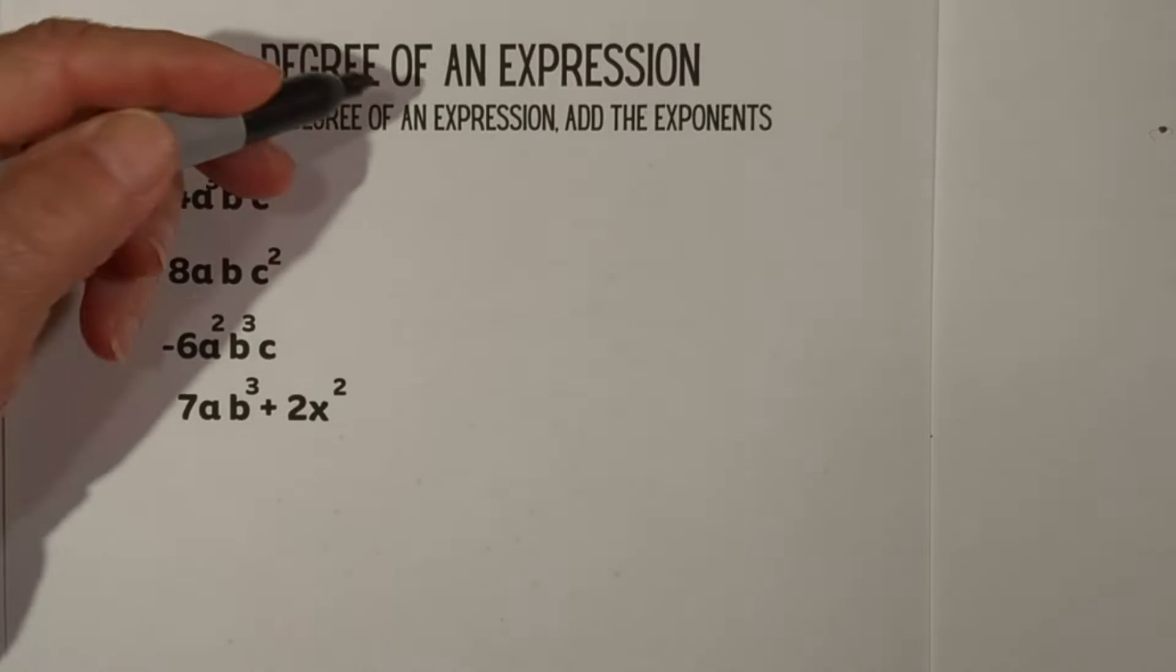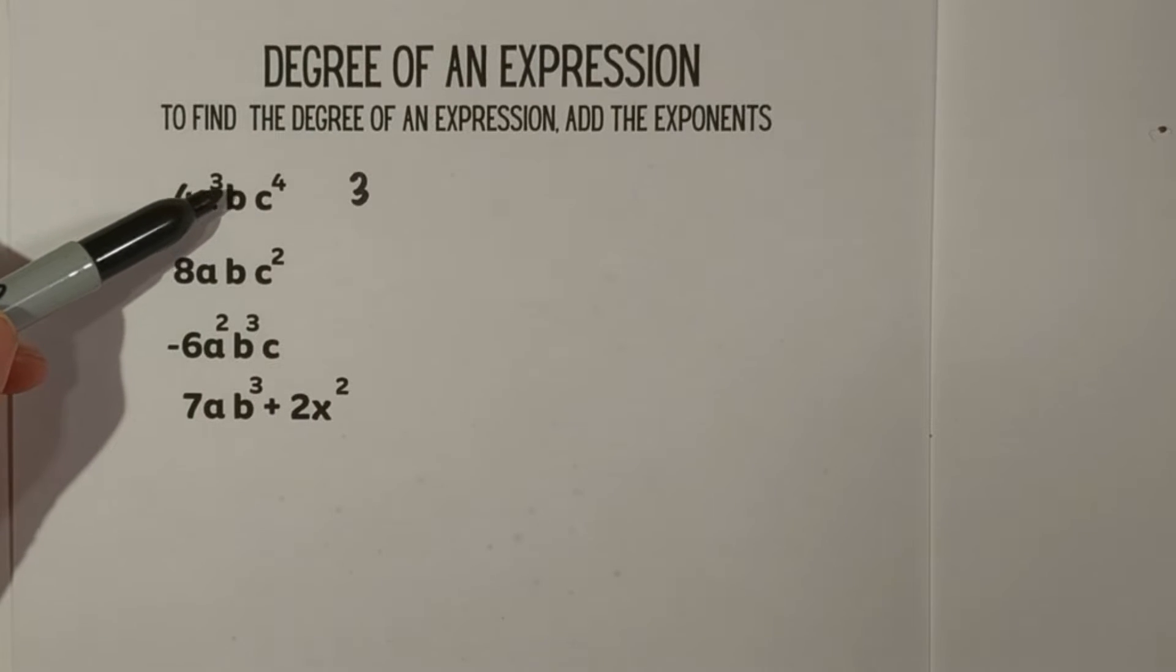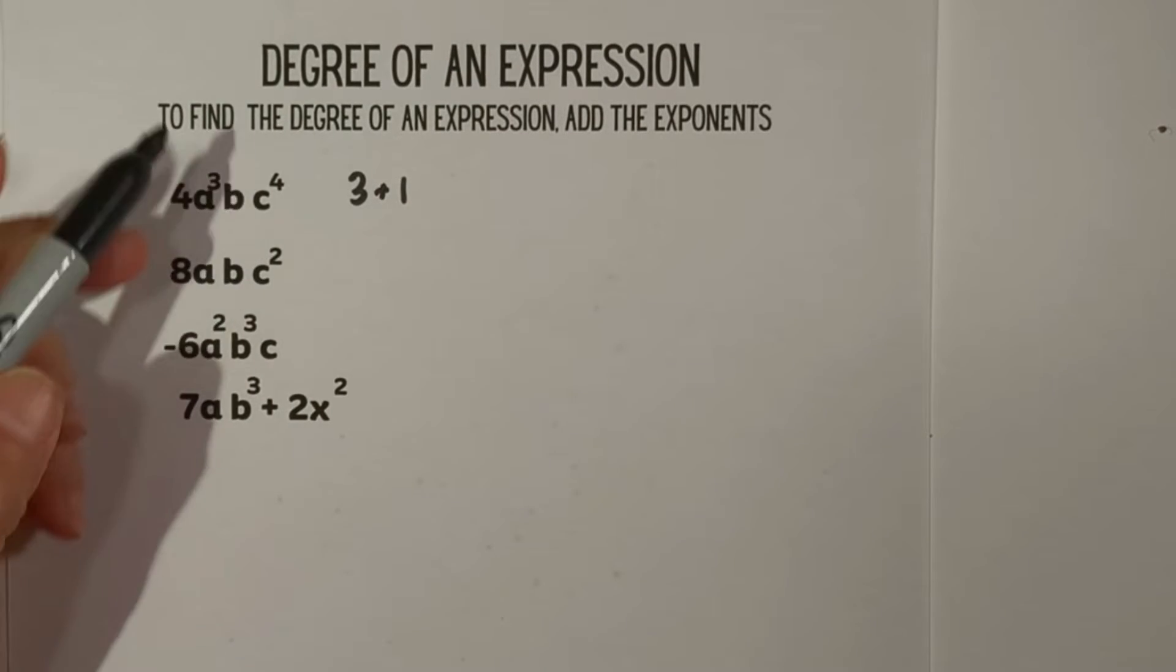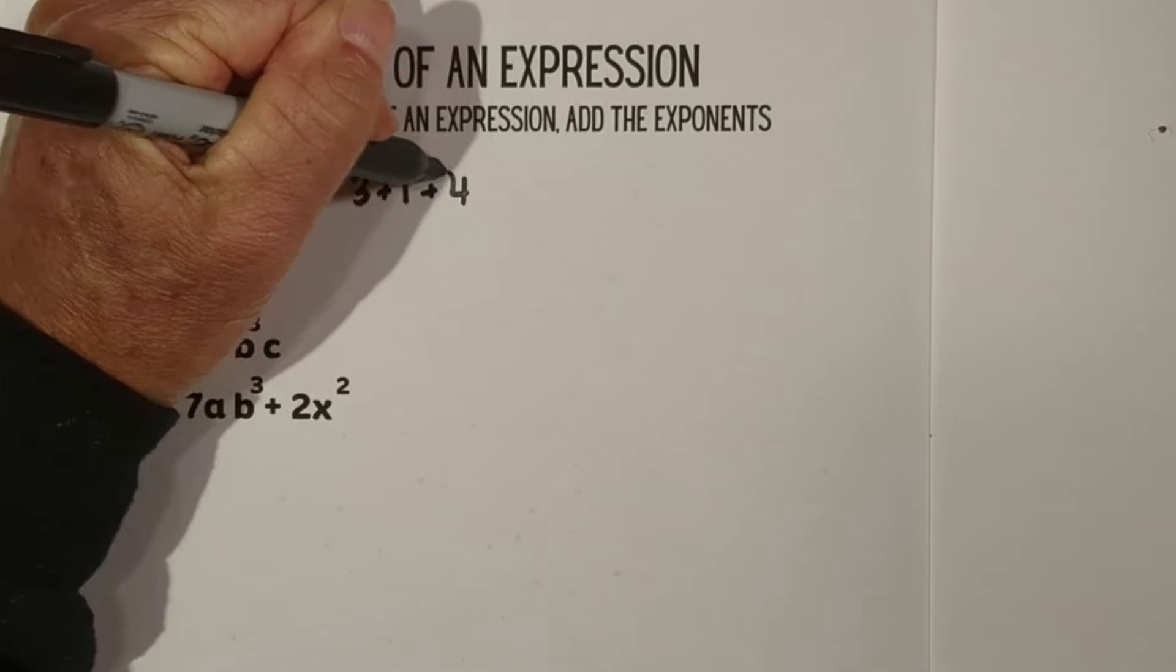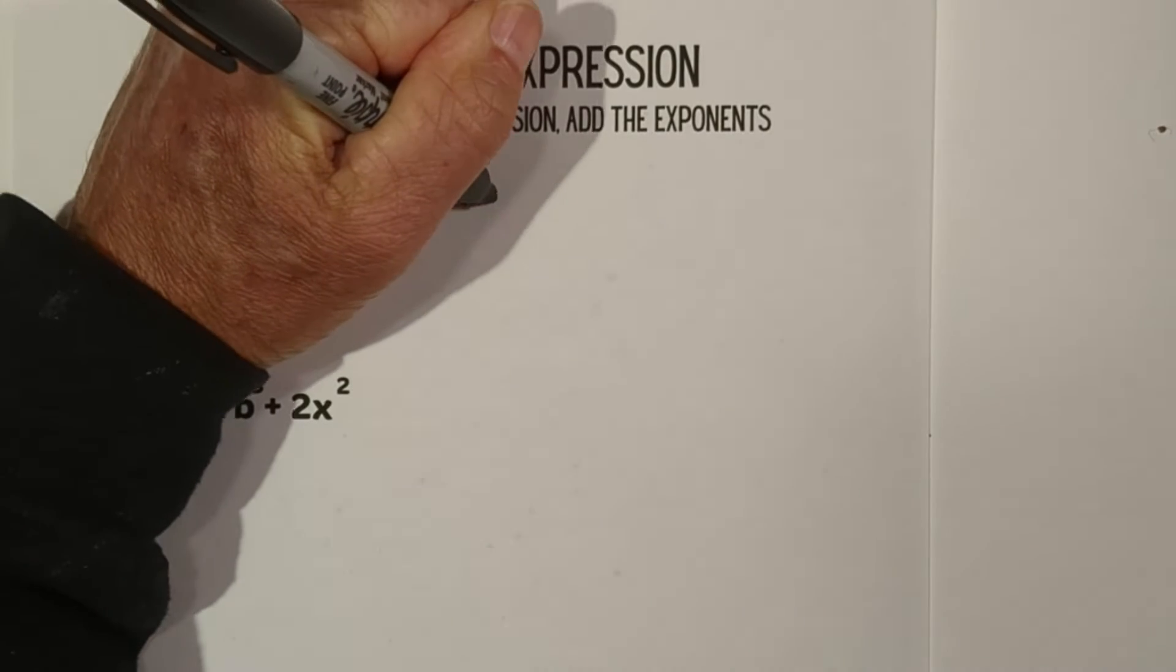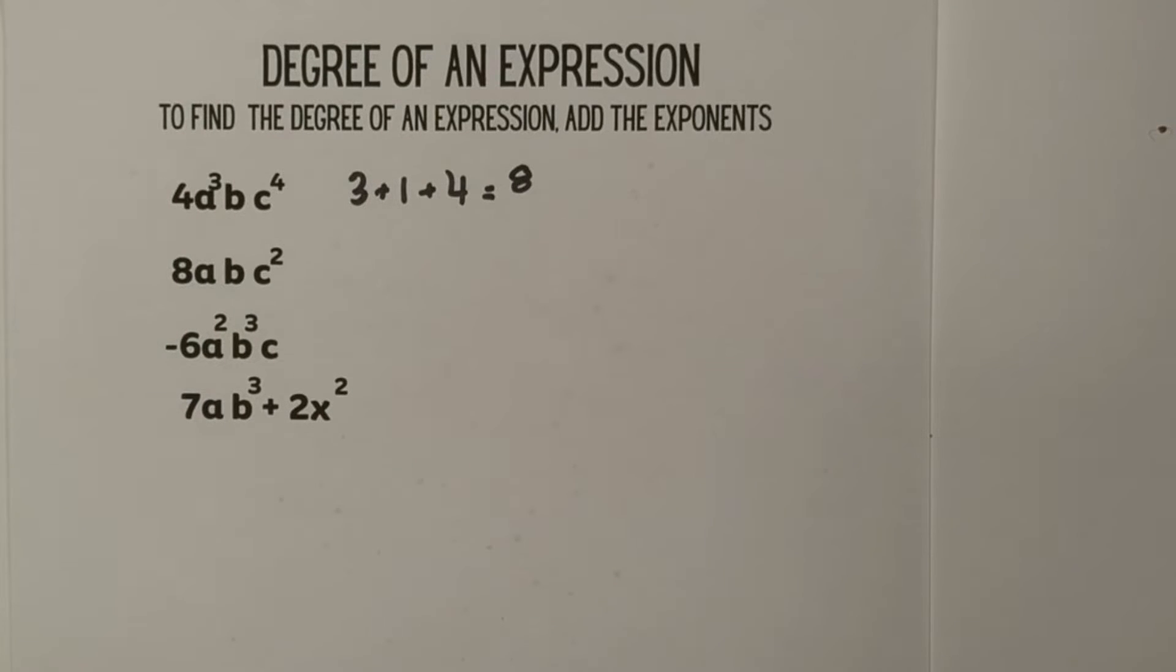Let's look at this monomial. We have a 3. Now there is not an exponent here, so when there's not one, you can assume it is a 1. And then we have a 4. So that is 3 + 4, plus 4 is 8. So the degree of this monomial is 8.